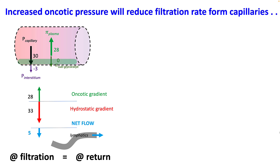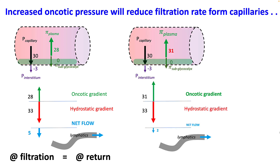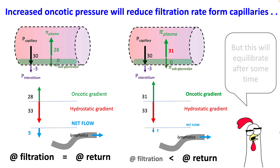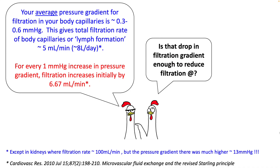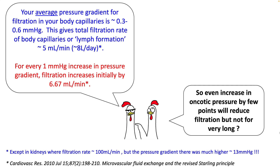Before the transfusion, your oncotic gradient is around 28, your hydrostatic gradient is around 33, and your net flow gradient is around 5, at which point your filtration rate equals the rate of return from the lymphatics. However, when you give the albumin bolus, your plasma oncotic pressure increases to 31, which decreases your net flow — the filtration rate decreases compared to lymphatic return. This will re-equilibrate after some time. Your average pressure gradient for filtration in capillaries is on the order of 0.3 to 0.6 mmHg, giving a total filtration rate of about 5 ml per minute. Every 1 mmHg increase in pressure gradient increases filtration by around 6 ml per minute. So increasing oncotic pressure even by a few points will reduce filtration, but certainly it won't hold for a very long period.